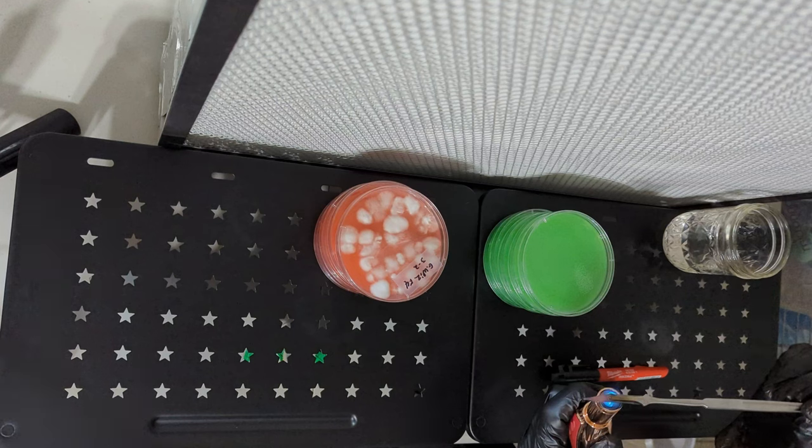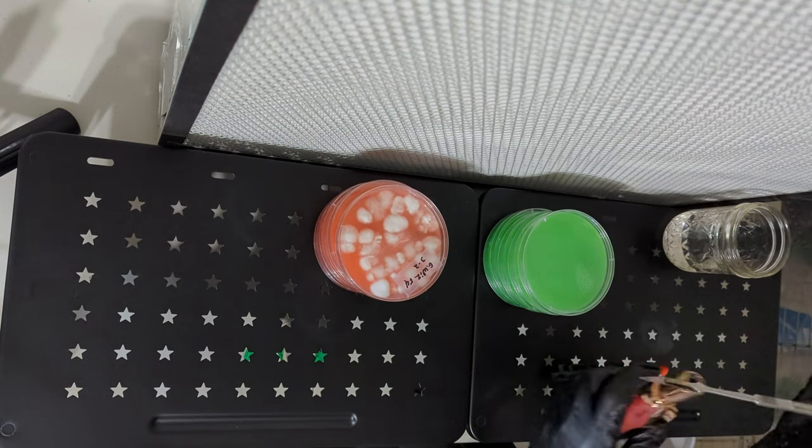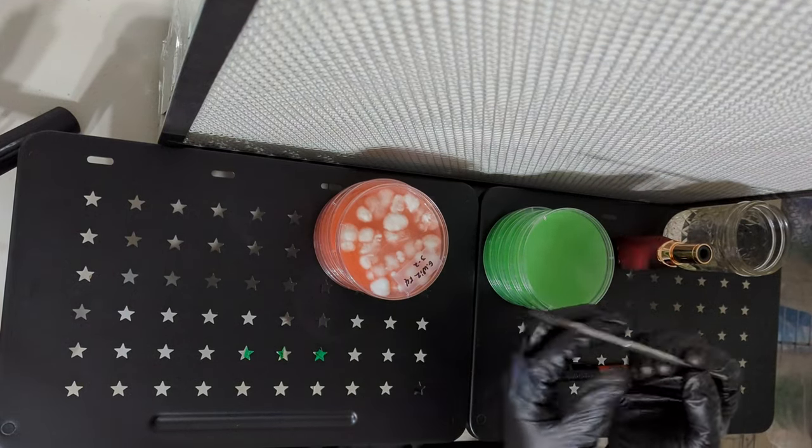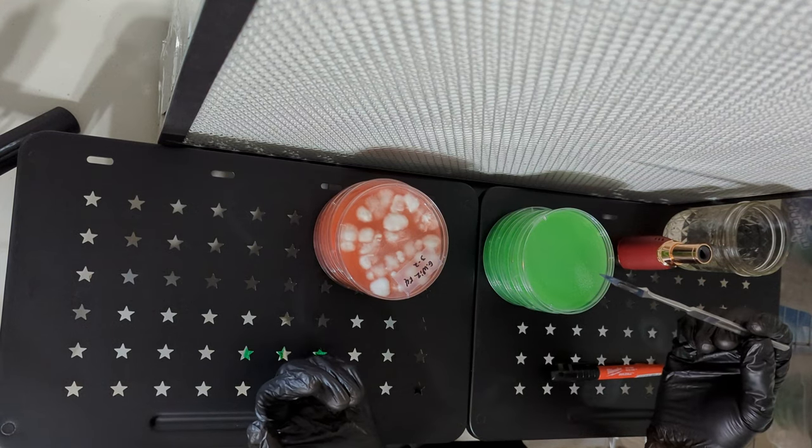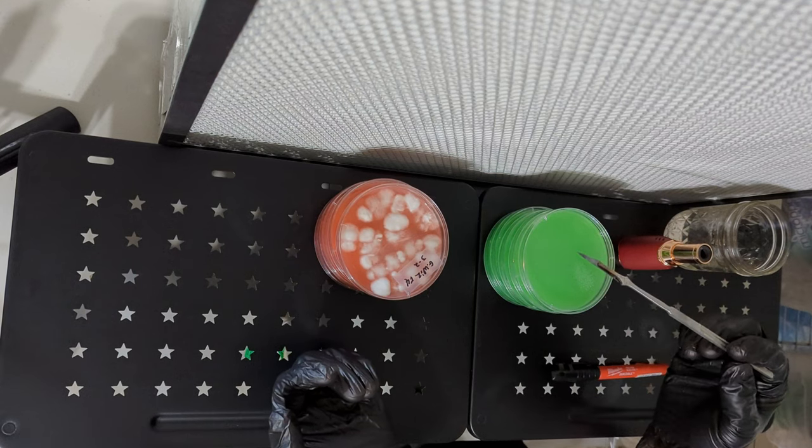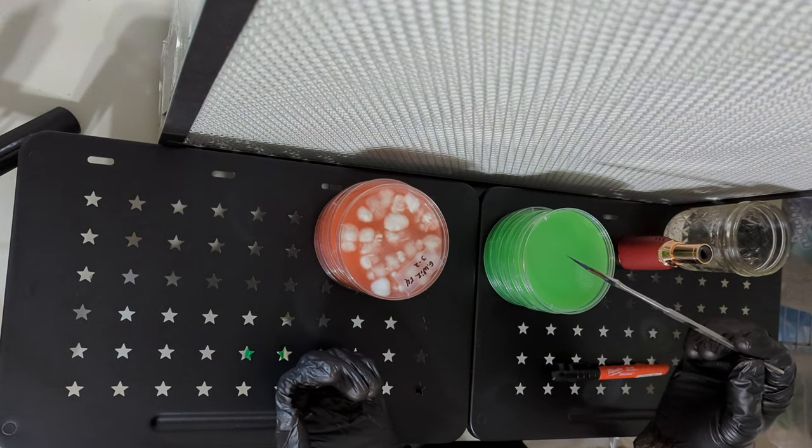If you're unfamiliar with agar, then this video is for you. Agar once prepared is a gelatinous substance like gelatin or jello, but it's made from a different source than gelatin. Agar comes from red algae, so it's vegan as well, as it comes from the cell walls of the algae.